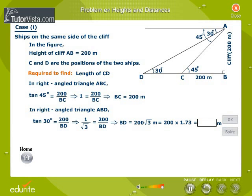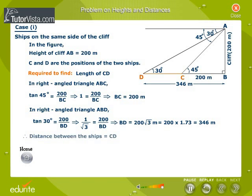BD is equal to 200 into 1.73, that is 346 metres. Therefore, the distance between the ships is equal to CD, that is, equal to BD minus BC, that is, 346 minus 200.